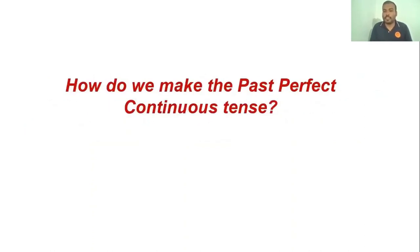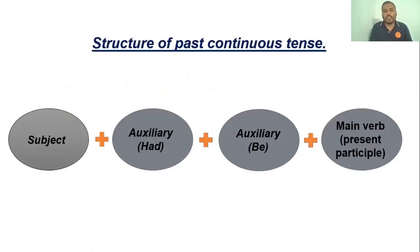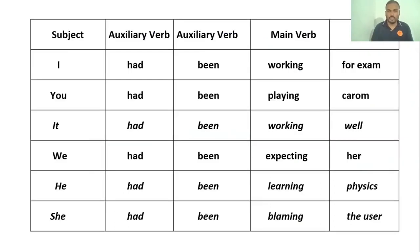How do we make a past perfect continuous tense sentence? The structure is: subject, auxiliary, and main verb. The subject may be singular or plural — I, we, she, he, it. The first auxiliary is the past tense form 'had,' used for both singular and plural. The second auxiliary is the past participle of 'be,' which is 'been.' The main verb is used in its ing form, the present participle.